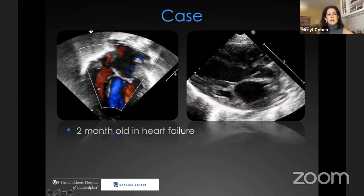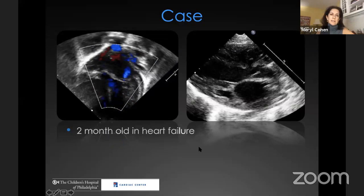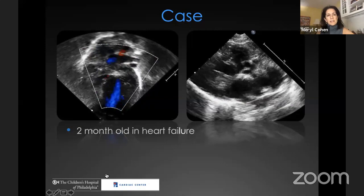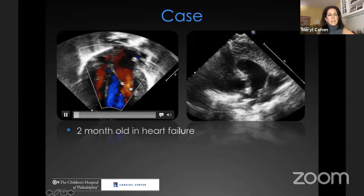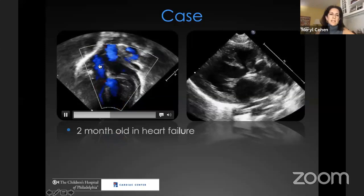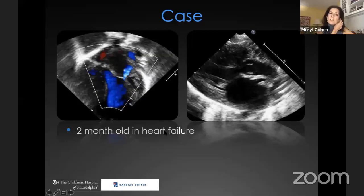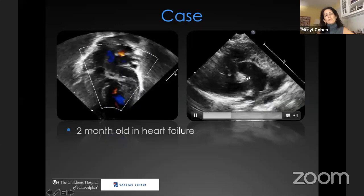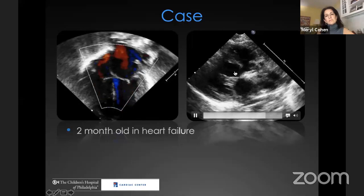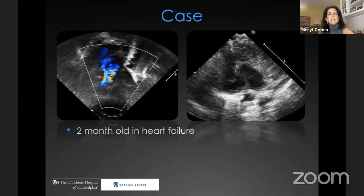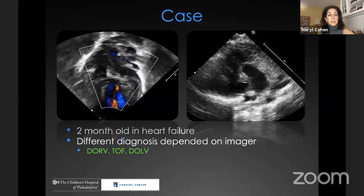I'm going to start by highlighting a case — a two-month-old who presented to us almost a decade ago. In the apical four-chamber view and parasternal long-axis view, the patient had heart failure. The left side was large due to VSD physiology; the aorta looked more rightward than expected, and the pulmonary artery more leftward. In the parasternal long-axis view, there was mitral-to-aortic continuity, but the aorta looked like it could be coming from either ventricle. Various people looked at these images and the differential diagnosis was dependent on the imager.